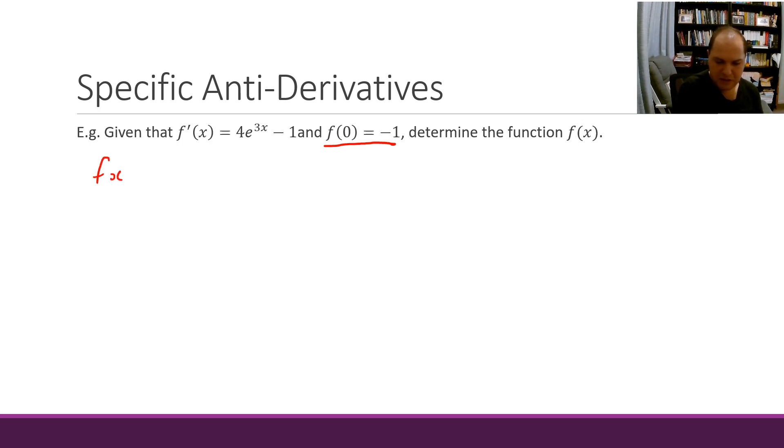So my function is going to be the integral of my derivative, so 4e to the 3x minus 1 dx, which is going to be 4e to the 3x divided by 3 (that's my rule when integrating exponentials, divided by the derivative of the power), and then minus integral of 1 is just x, plus c.